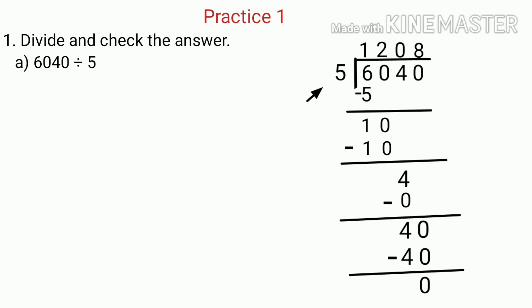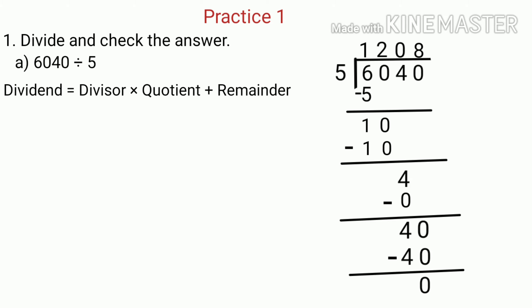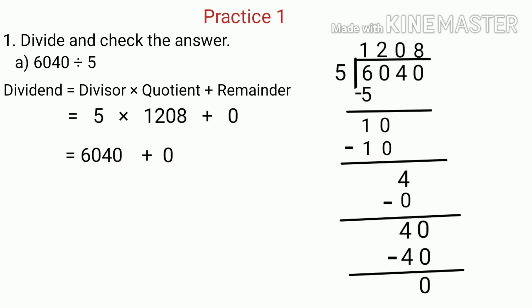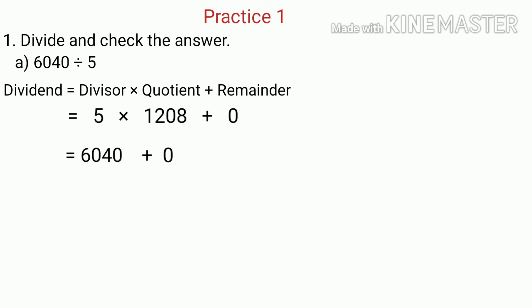Here the divisor is 5, the quotient is 1208, and the remainder is 0. We check using the rule: Dividend equals divisor multiplied by quotient plus remainder. We multiply 5 and 1208 to get 6040 as the product, then add 0 to 6040. When we add 0 to 6040, we get the same number — 6040, which equals the dividend. So the answer is correct.